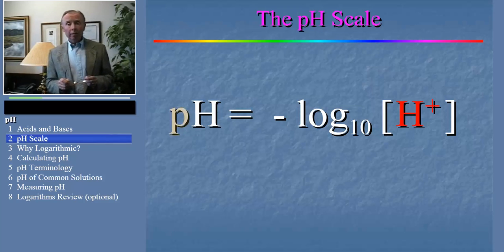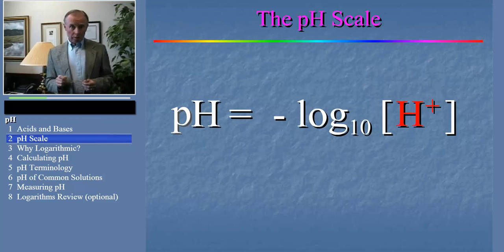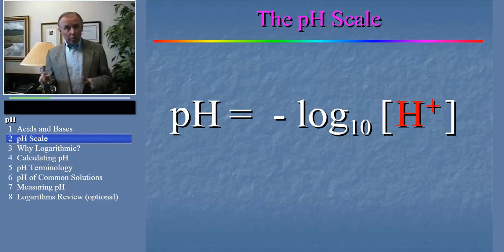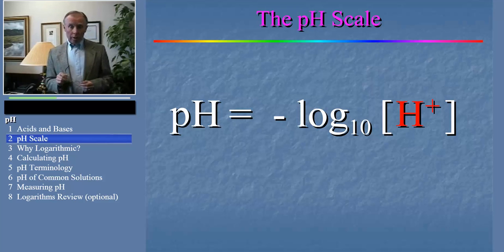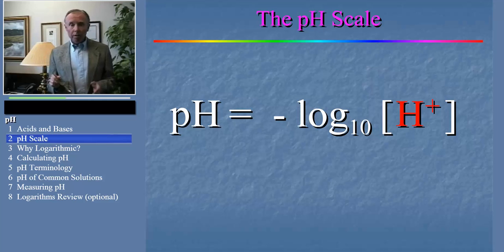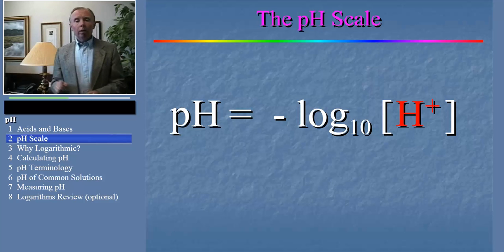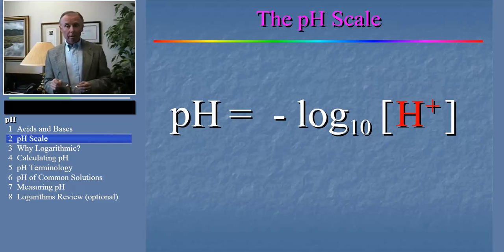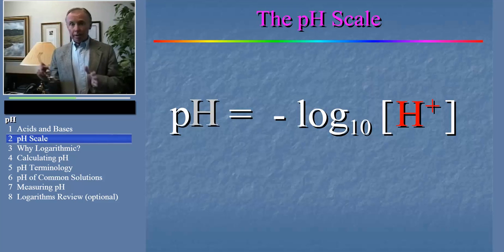First, the P. This letter is just an abbreviation of a mathematical function. Specifically, the P of any numerical value is the negative log to the base 10 of that number. In this case, pH is the negative log to the base 10 of the hydrogen ion concentration, hence the H.